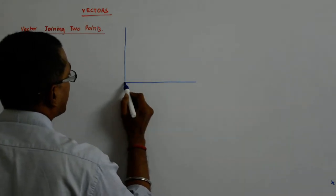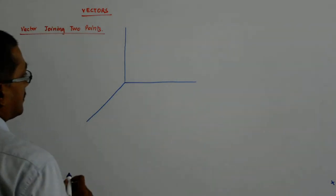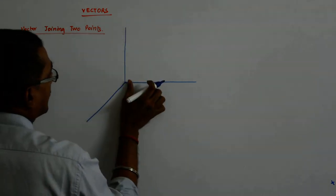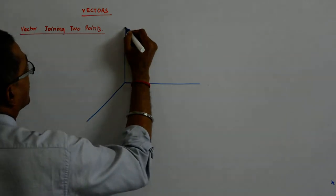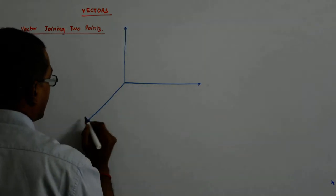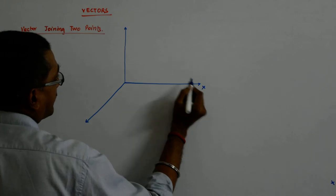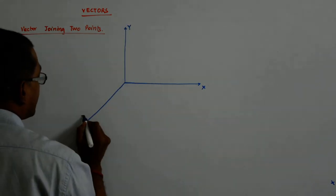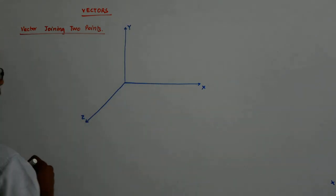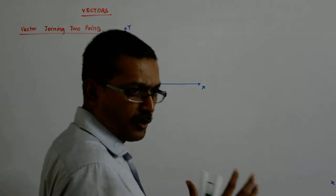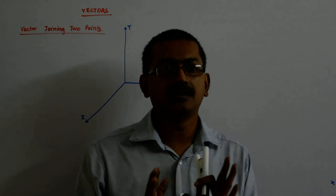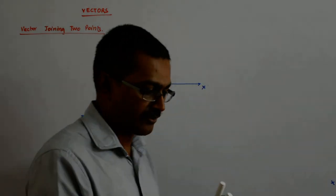So this is my Cartesian space, this is the 3D space. This is x, this is y, this is z, and we have got two points and all the points can be indicated by the respective position vectors.